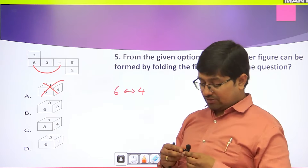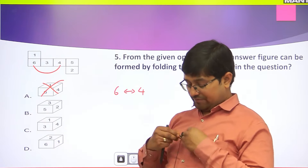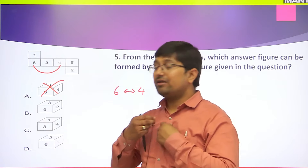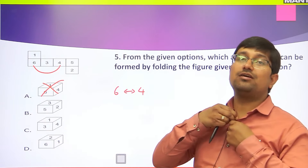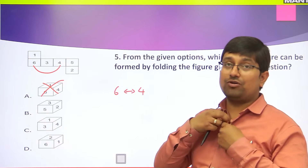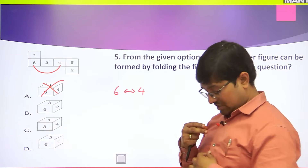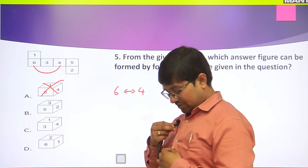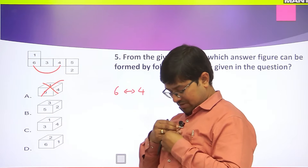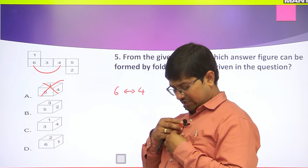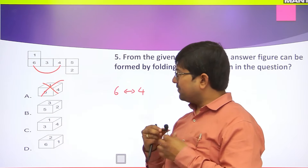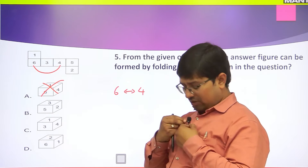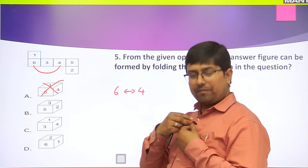Due to certain reasons, some options cannot be the dice which is formed after folding. Let us look at the alternating property: 3 opposite 5, and one opposite one - that leads us to option C.